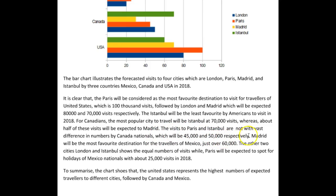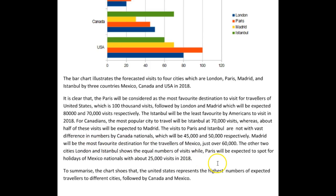Visits to Paris and Istanbul by Canadian nationals do not differ in number significantly, at 45,000 and 50,000 respectively. It is projected that Madrid will be the destination of choice for travellers from Mexico, with just over 60,000 visitors. We can use "will be" here if we have said "it is projected" before it.